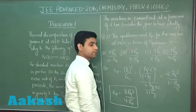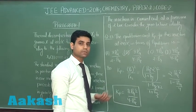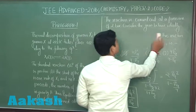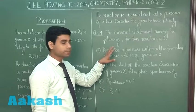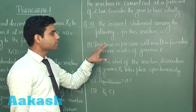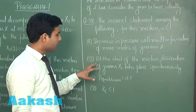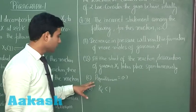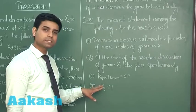The correct answer for Question 33 is option B. Now for Question 34, which asks for the incorrect statement among the following: Option A — decrease in pressure results in formation of more moles of gas X. Option B — at the start of the reaction, dissociation of X₂ takes place spontaneously. Option C — beta_eq = 0.7. Option D — Kc is less than 1.